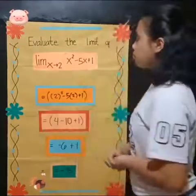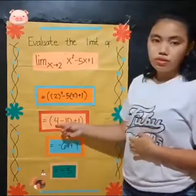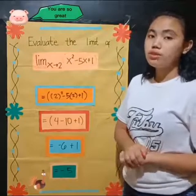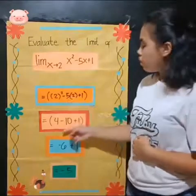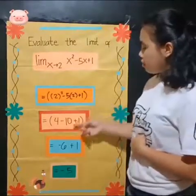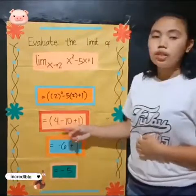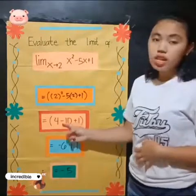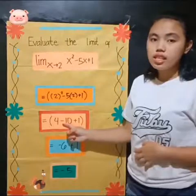Let's proceed. 2 squared will be 4 because 2 times 2 equals 4. Negative 5 times 2 is equal to negative 10, and copy the positive 1. 4 minus 10 is equal to negative 6 because the sign of the 10 is negative.